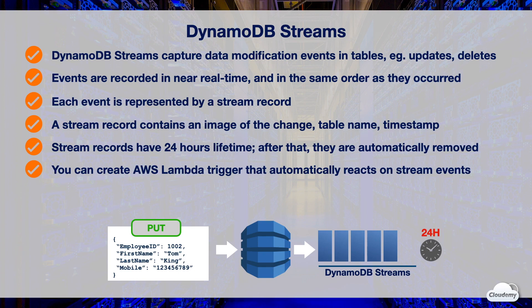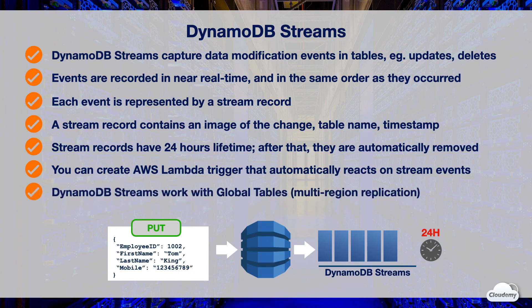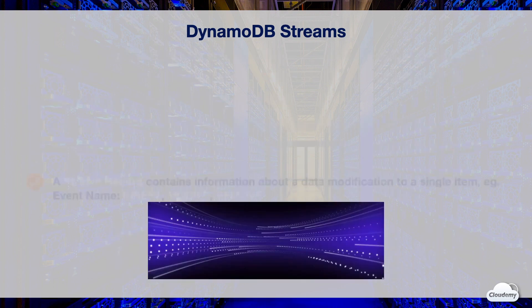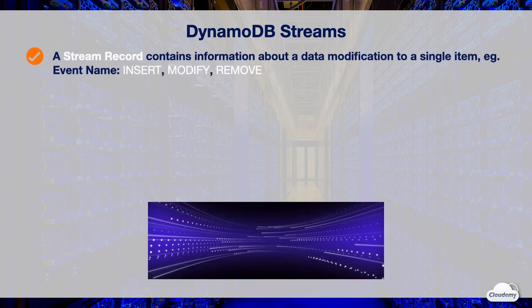DynamoDB Streams also work with DynamoDB global tables. Global tables use streams behind the scenes to replicate data across multiple regions. A stream record contains information about data modification to a single item, and each stream record has one of the following event names: Insert, Modify, or Remove.